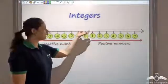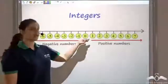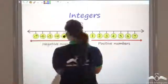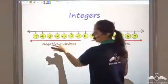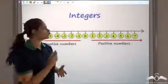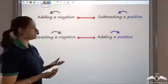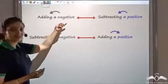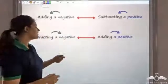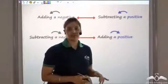We have seen integers. Integers include positive numbers, negative numbers, and zero. All the numbers to the right of zero are positive; all the numbers to the left of zero are negative. With the invention of negative numbers, we had to see how to add and subtract them. Addition of a negative number was the same as subtracting a positive number on the number line. Similarly, subtracting a negative number was the same as adding a positive number on the number line.